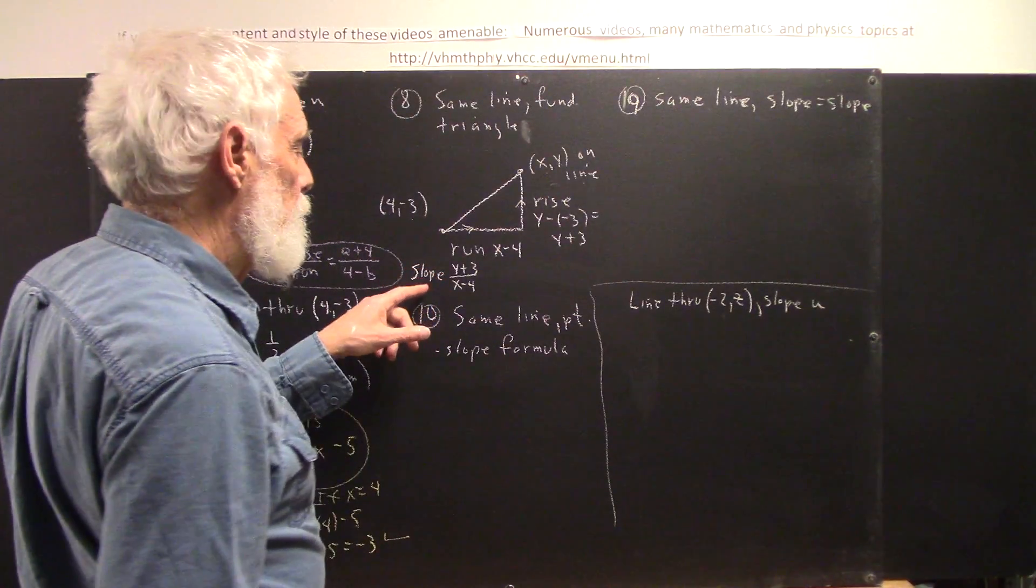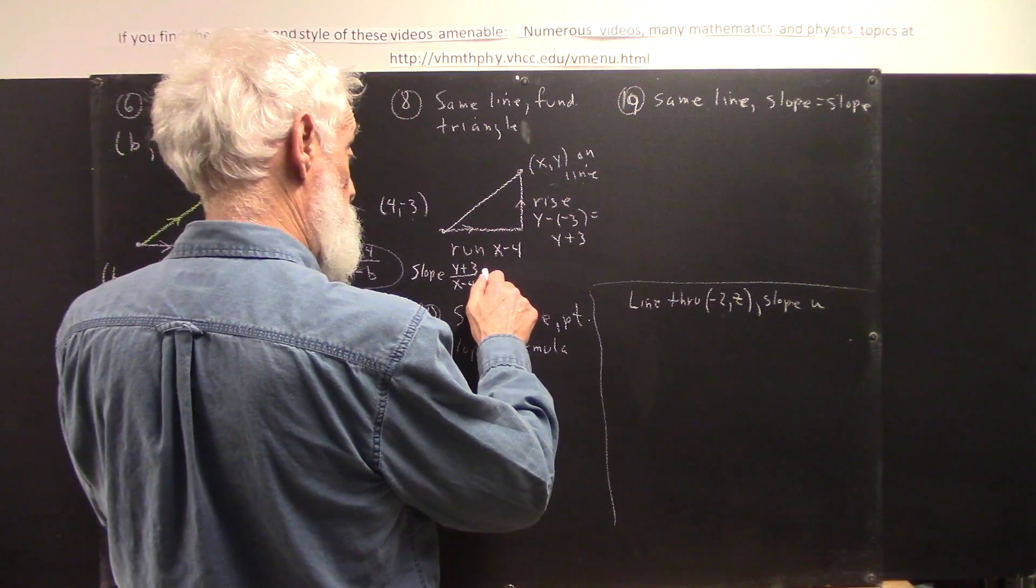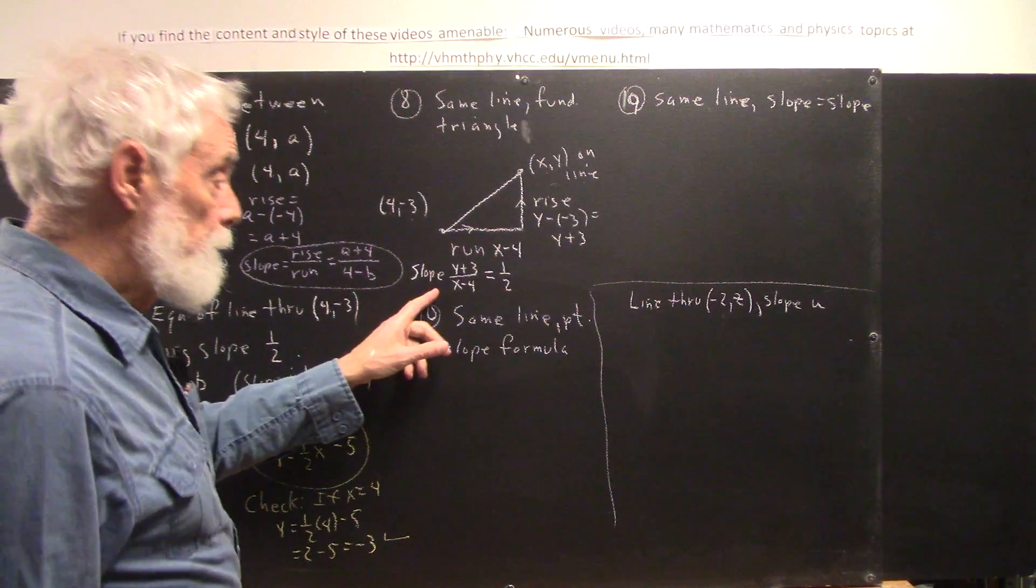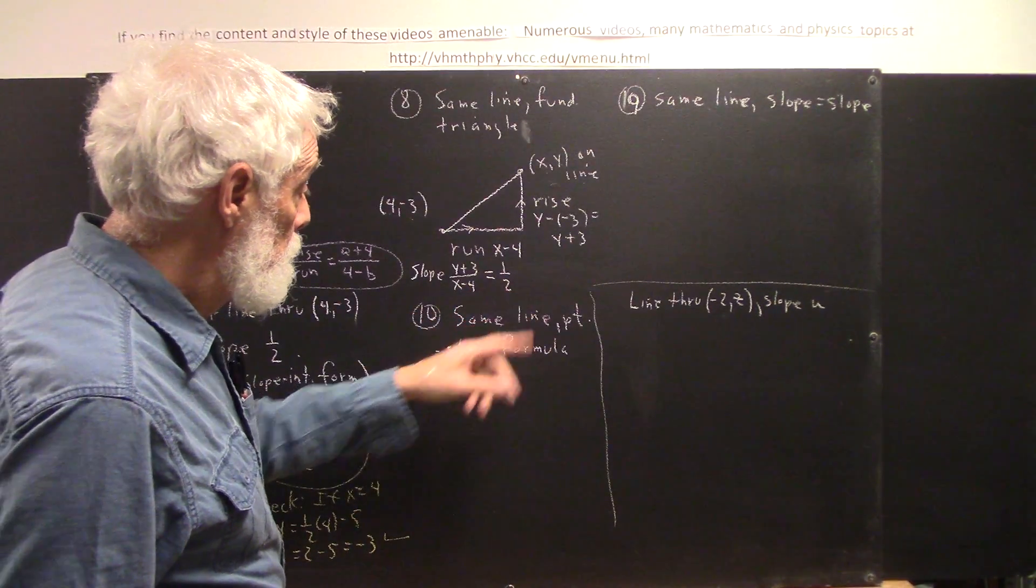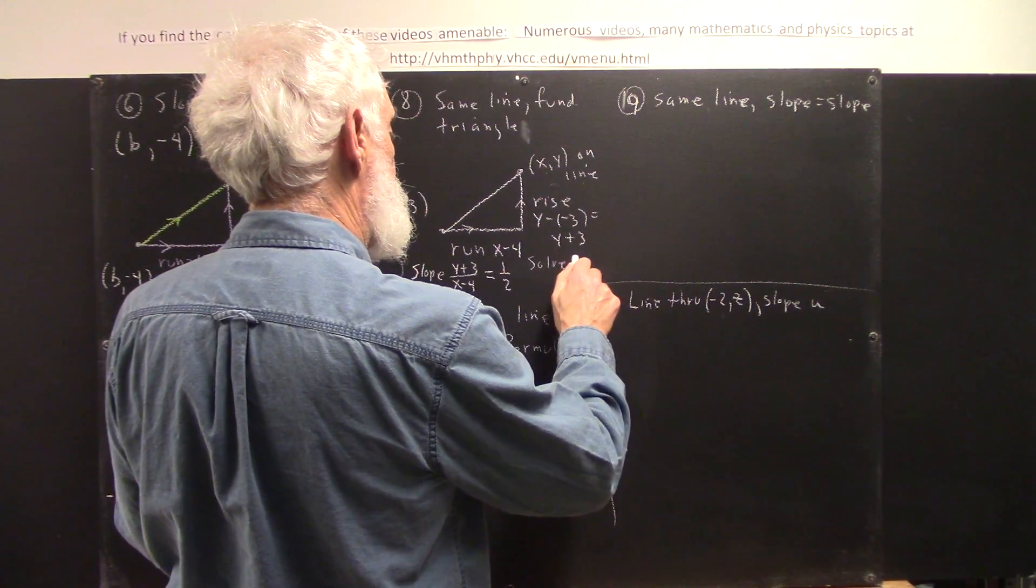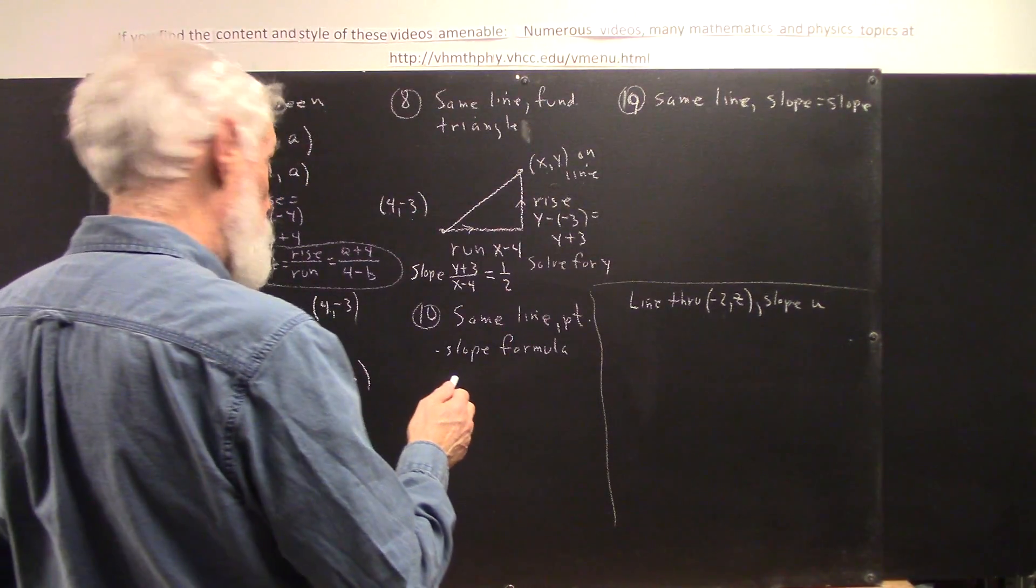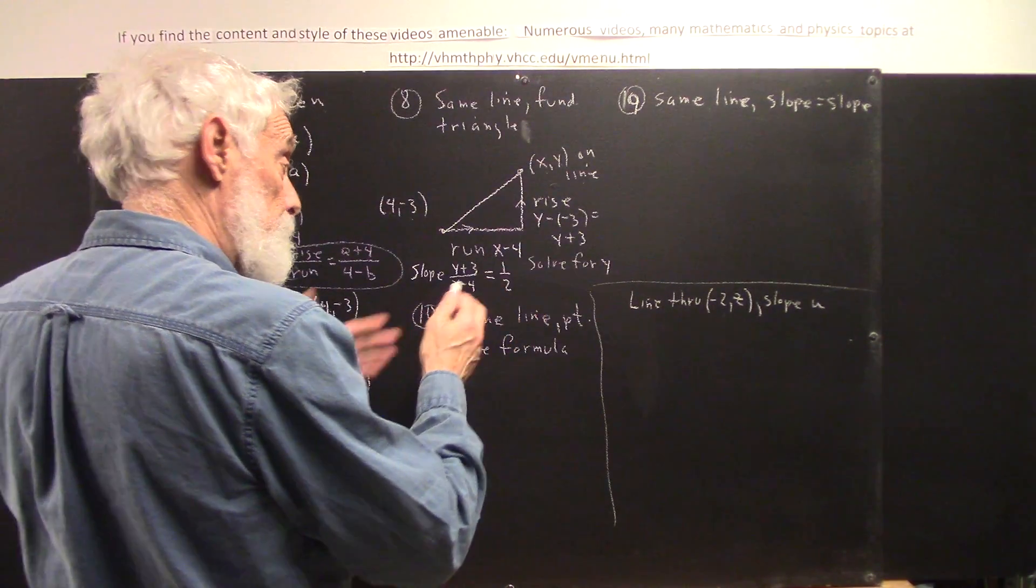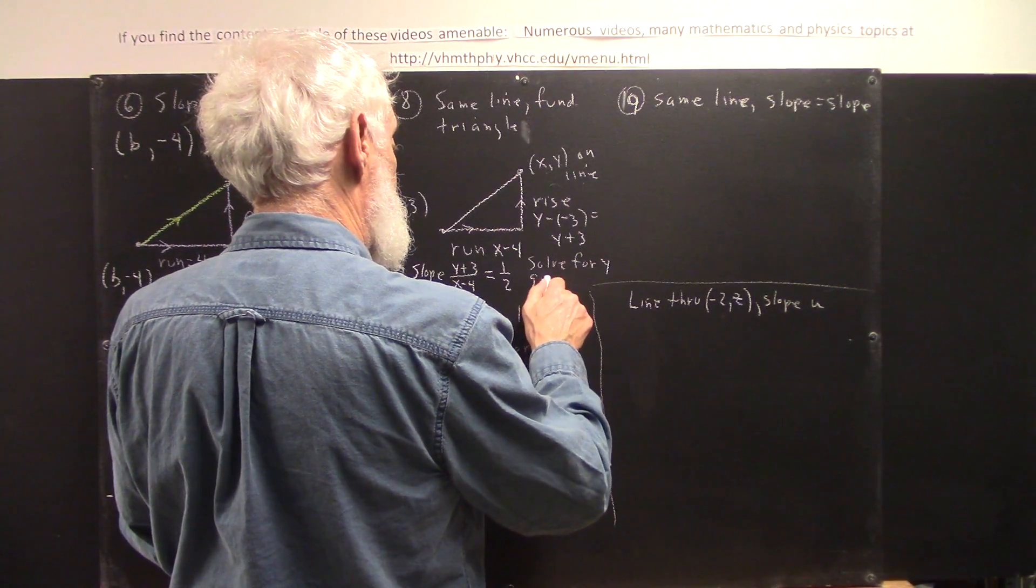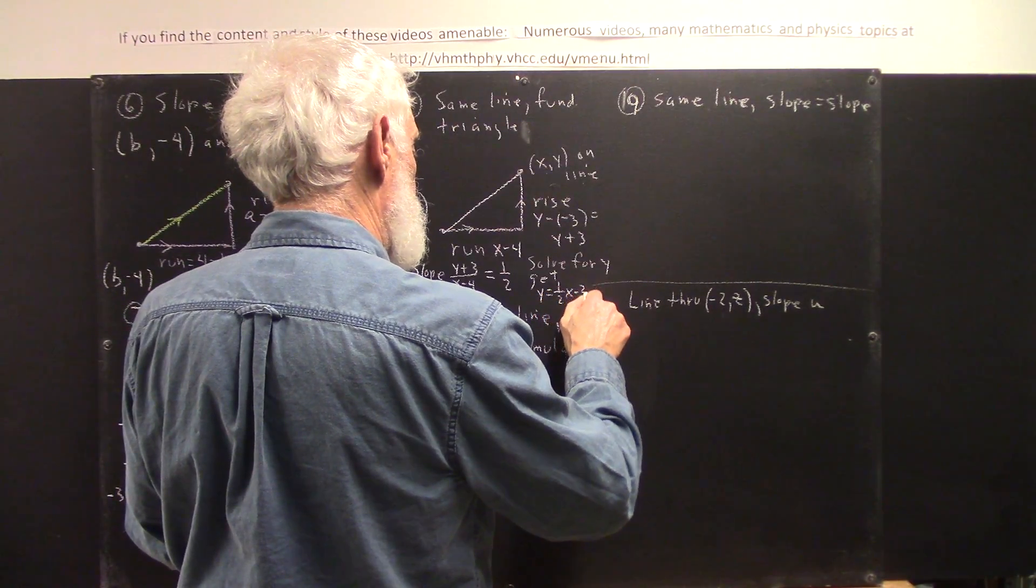So the slope is y plus 3 over x minus 4. Of course, the slope is also known to be 1 half. So that's got to be equal to 1 half. So we can solve this equation for y. Not leaving myself enough room here, but we solve for y. Well, we multiply both sides by x minus 4, subtract 3.